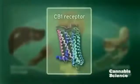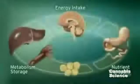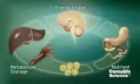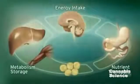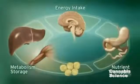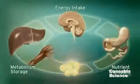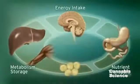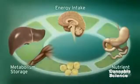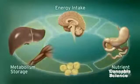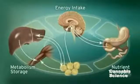CB1 receptors are located in the brain, digestive tract, muscle, and adipose tissue. Integration of these central and peripheral ECS components is achieved through neuronal and hormonal signaling.